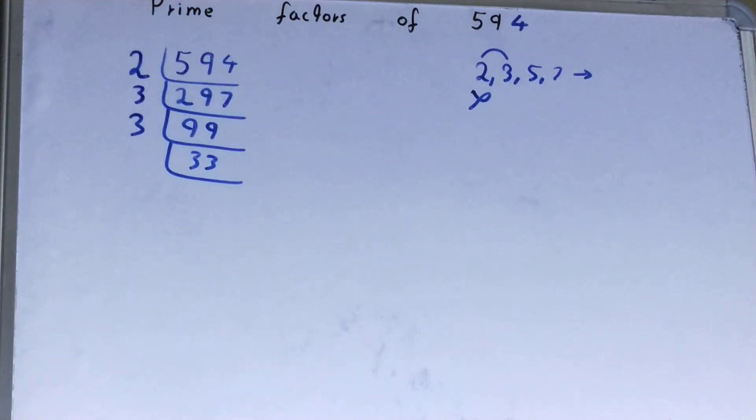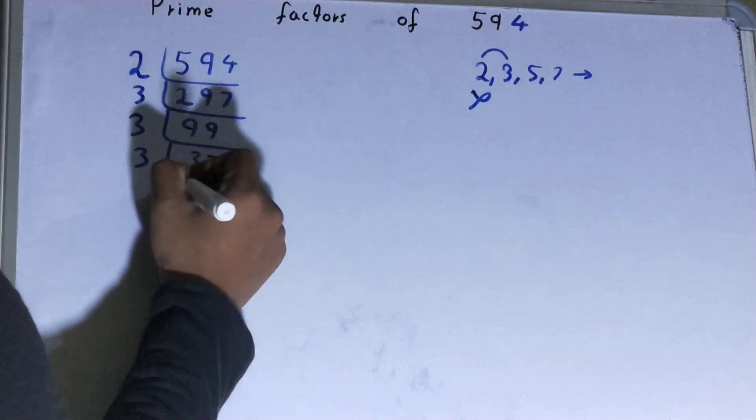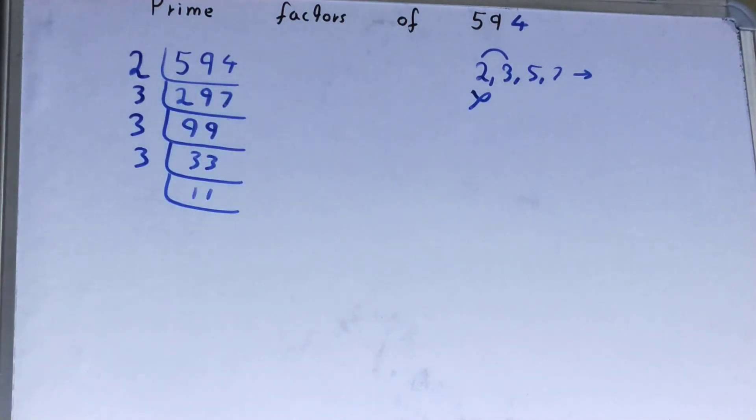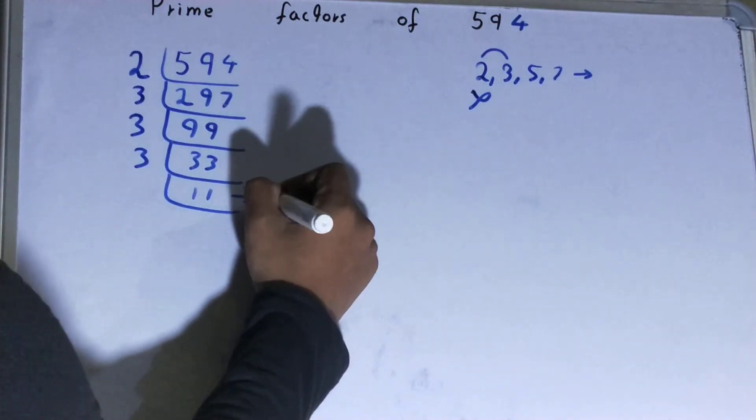33 is further divisible by 3. It will be 11 times. So divide it and you will get 11. Now, 11 is not divisible by 3, and it is also a prime number.